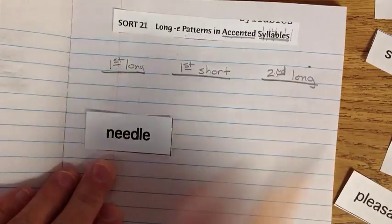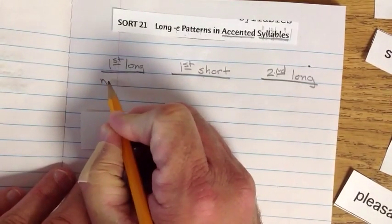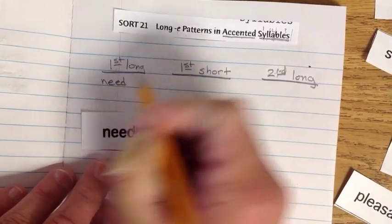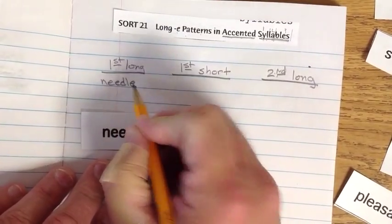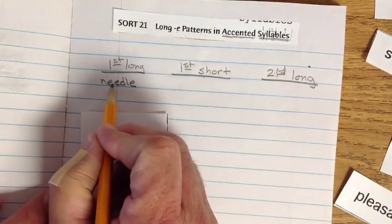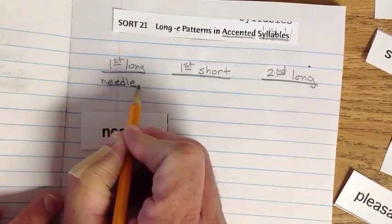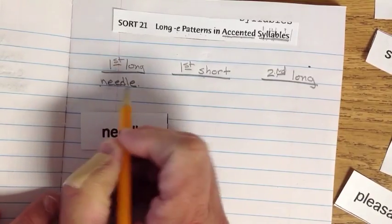Needle. Yes. It is in the first. So we're going to go needle. Needle. Knee. There are E patterns. E. Needle.